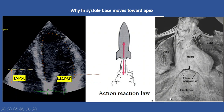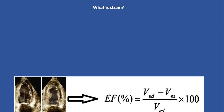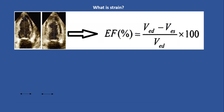Keeping this concept in mind, we use it in strain echo. Now let's answer this question: What is strain? Do you remember ejection fraction? Ejection fraction is the percentage or fraction of left ventricular volume changes during cardiac activity — in other words, the percentage of left ventricular volume that changes from end-diastole to end-systole. We measure end-diastolic volume minus left ventricular systolic volume, divided by end-diastolic volume, multiplied by 100. That gives us ejection fraction.